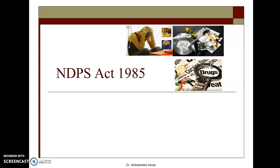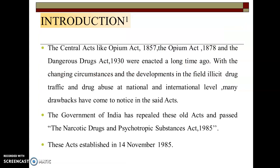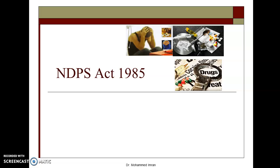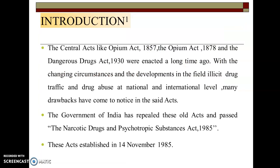This act is related to all the drugs which are banned or whose use is banned by the government. Before the passing of this 1985 act, there were certain acts like the Opium Act 1857, Opium Act 1878, and the Dangerous Act 1930. But with the changing circumstances and development in the field of illicit drug traffic and drug abuse at the national level, many drawbacks came to notice in those acts. Therefore, the Government of India replaced these old acts and passed the NDPS Act 1985 on November 14, 1985.